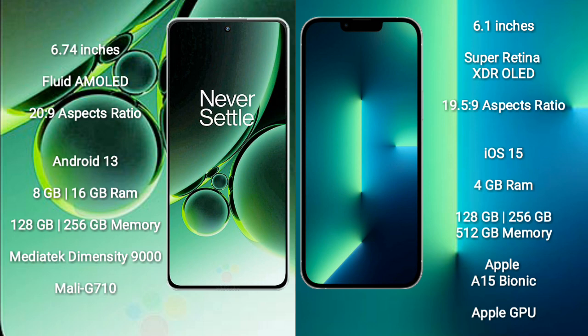OnePlus Nord 3 comes with 8GB or 16GB RAM and 128GB to 256GB internal storage. It is powered by a MediaTek Dimensity 9000 processor with a Mali-G710 GPU.